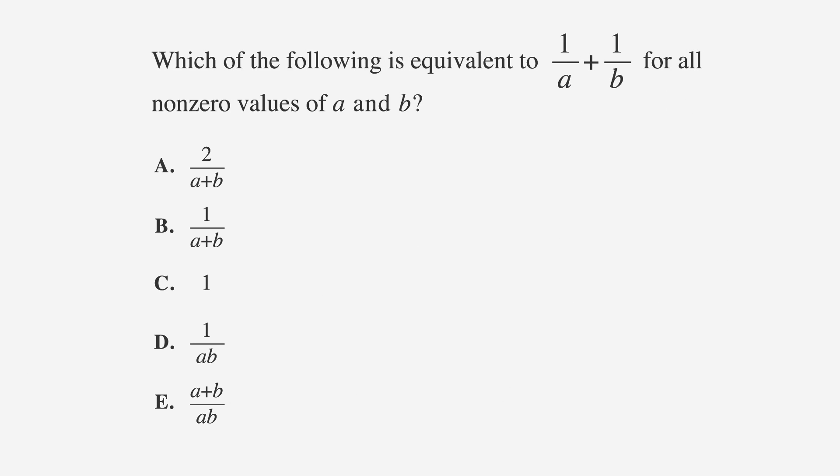The question asks, which of the following is equivalent to 1 over A plus 1 over B for all non-zero values of A and B? We know that this is a good problem for the picking numbers strategy because there are variables in the question and in the answer choices.